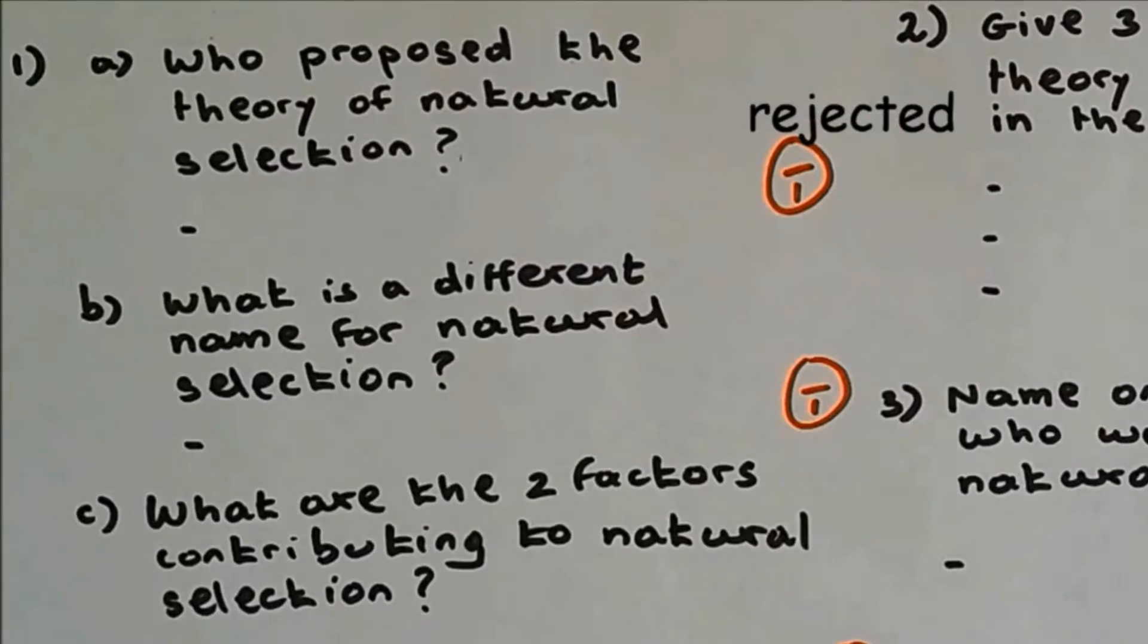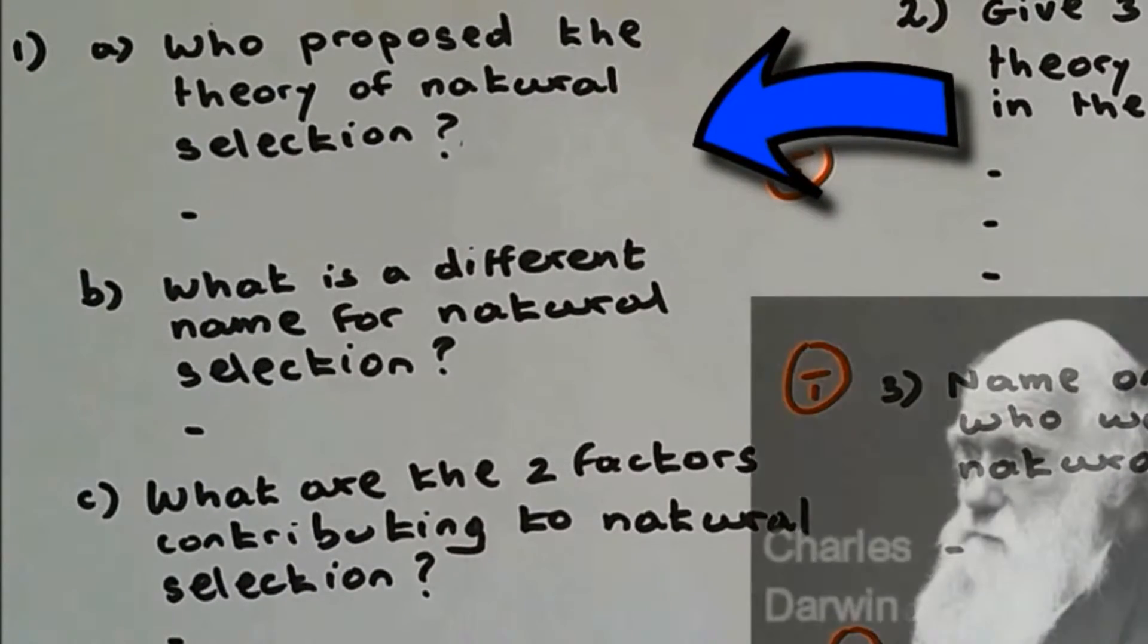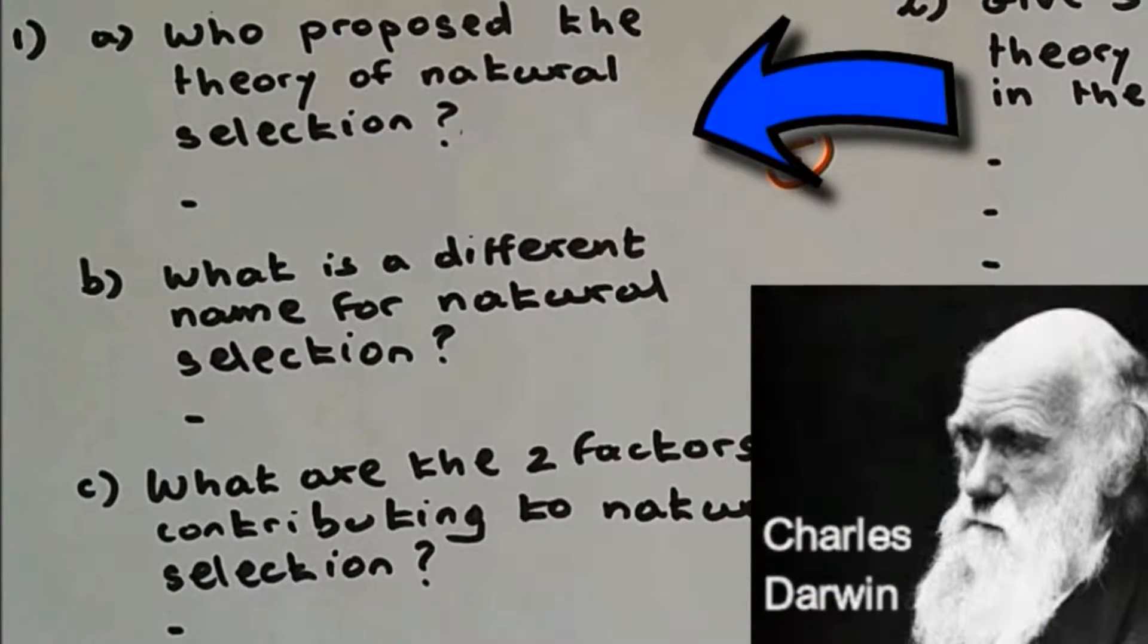Question number 1a: Who proposed the theory of natural selection? The scientist who proposed natural selection is Charles Darwin.